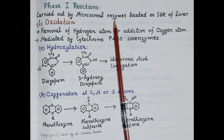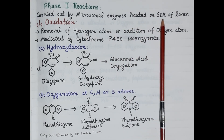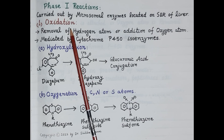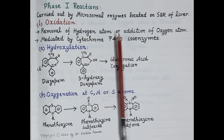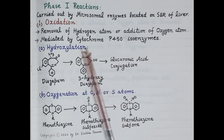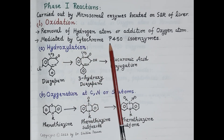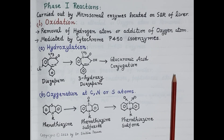Phase 1 reactions are primarily carried out by cytochrome P450 group of microsomal enzymes located on the smooth endoplasmic reticulum in the liver, and include oxidation, reduction, and hydrolysis. Oxidation reactions cause either removal of a hydrogen atom or addition of an oxygen atom to the drug molecule. These are mediated by cytochrome P450 enzymes, and there are four main types: hydroxylation, oxygenation at carbon, nitrogen or sulfur atom, N-dealkylation, and oxidative deamination.